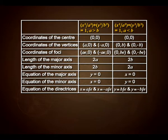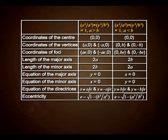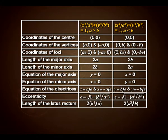The equations of the directrices are x equals a upon e and x equals minus a upon e when a is greater than b; and y equals b upon e and y equals minus b upon e when a is less than b. The eccentricity is e equals √(1 minus b² upon a²) when a is greater than b, and e equals √(1 minus a² upon b²) when a is less than b. The length of the latus rectum is 2b² upon a when a is greater than b, and 2a² upon b when a is less than b.